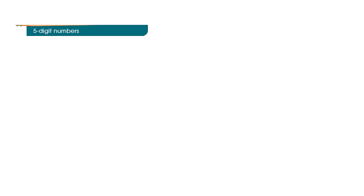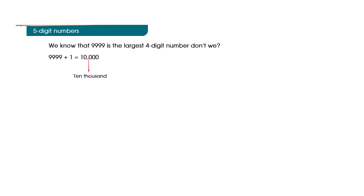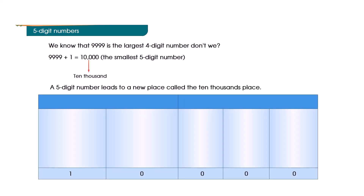Unit 1: Larger Numbers. 5-digit numbers. We know that 9999 is the largest 4-digit number. 9999 plus 1 is equal to 10,000, the smallest 5-digit number. A 5-digit number leads to a new place called the 10-thousands place.